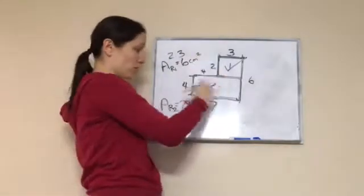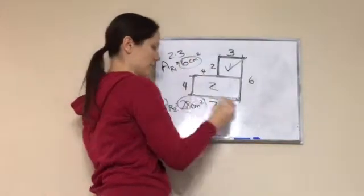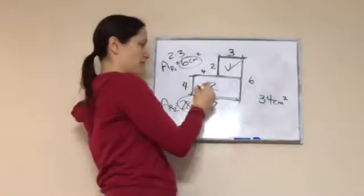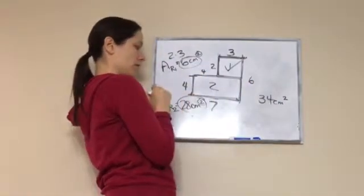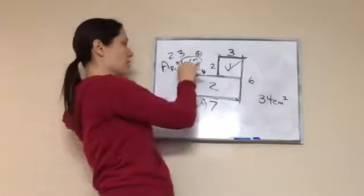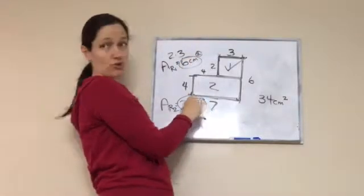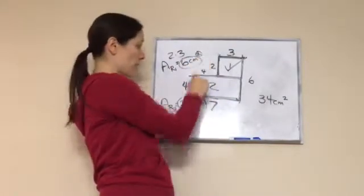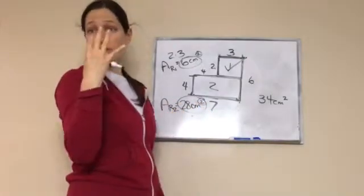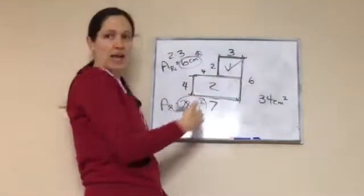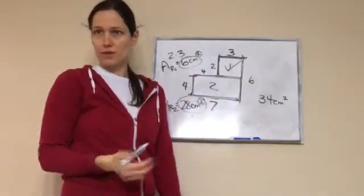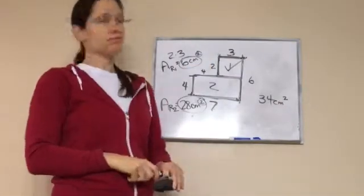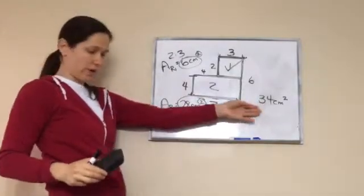To find the whole area, we add them: 28 plus 6 equals 34 centimeters squared. Since both areas are already in centimeters squared, we just add and keep the unit. If we were multiplying, centimeters squared times centimeters squared would give centimeters to the fourth power — but that doesn't apply here since we don't have 4D shapes. So 34 centimeters squared is the answer.